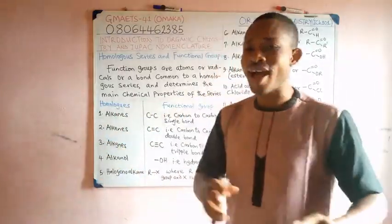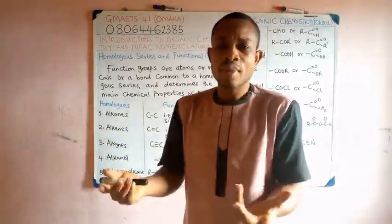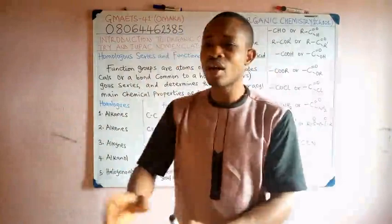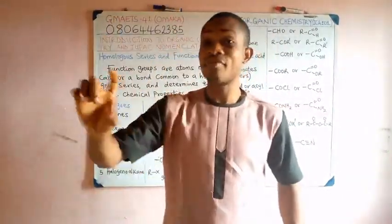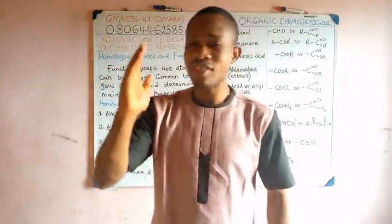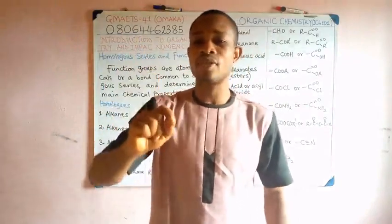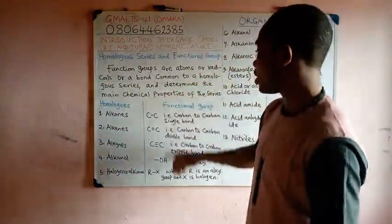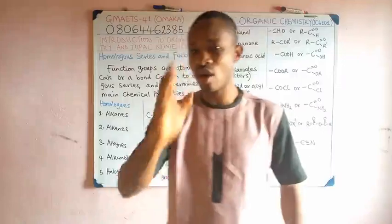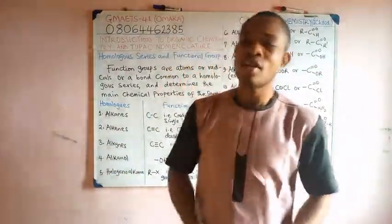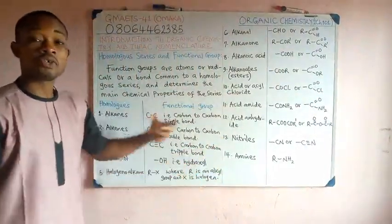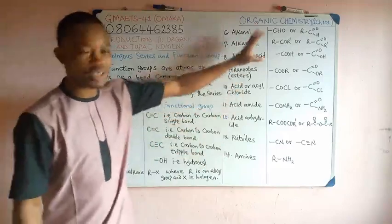Now, let us define it in terms of organic chemistry. Functional groups are simply atoms, radicals, or maybe a common bond that a particular homologue has. When you come to that homologue, all the members of that family will have that functional group. In fact, functional group is used to define or determine the chemical property of a particular group. Functional group determines the main chemical property of a particular homologue, a particular series.